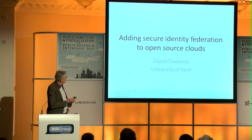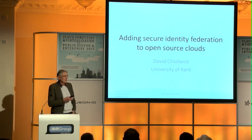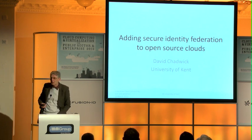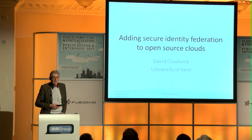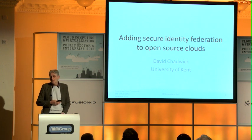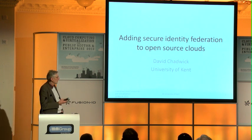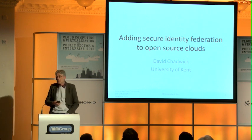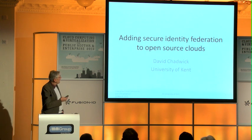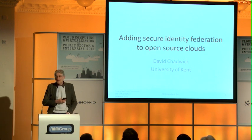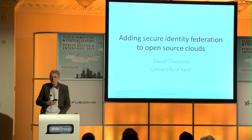We looked at how we can do this and because most of the suppliers currently are proprietary, we didn't want to add it to a proprietary system — we wanted to add it to an open source system. OpenStack is an open source cloud software supplier. You can download the software from the internet and run your own cloud service based on OpenStack. There are also public services based on OpenStack. I would guess it will become the Apache of cloud services.